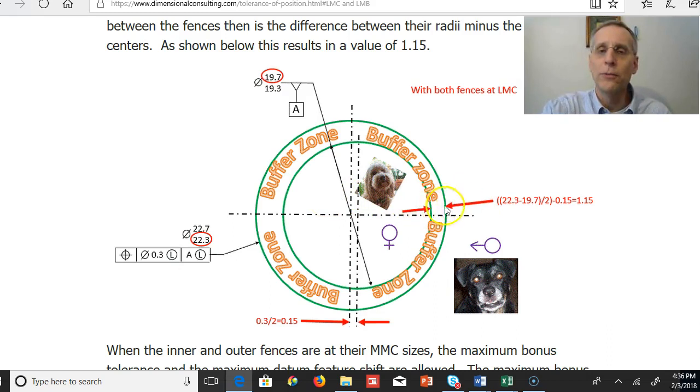So let's take a look at what this minimum distance is, this minimum buffer zone that we could have in this condition where both fences are at their least material condition sizes.